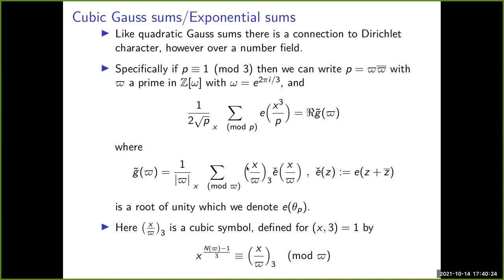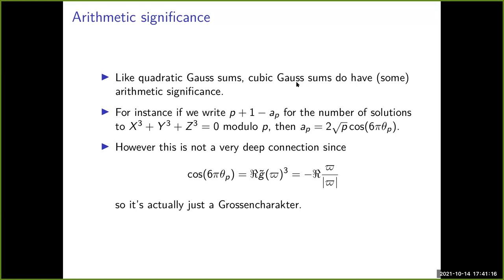Just as with quadratic Gauss sums, cubic Gauss sums are connected to more standard Gauss sums, which are Fourier transforms of characters. Specifically, you can write this cubic exponential sum as the real part of the Gauss sum of a cubic character. The cubic symbol is defined over the Eisenstein integers, analogously to the Legendre symbol, and there is a law of reciprocity for these cubic symbols.